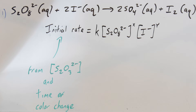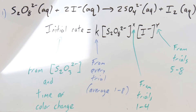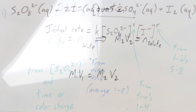The initial rate we're going to calculate comes from how much thiosulfate we had and the time it takes for that color change to appear. The reaction orders are X for the persulfate anion, worked out from trials one through four by holding the iodide concentration constant, and Y worked out from trials five through eight by holding the persulfate concentration constant. Then K is solved for in every trial after we've worked out X and Y, and we'll average that out over the eight room-temperature trials.